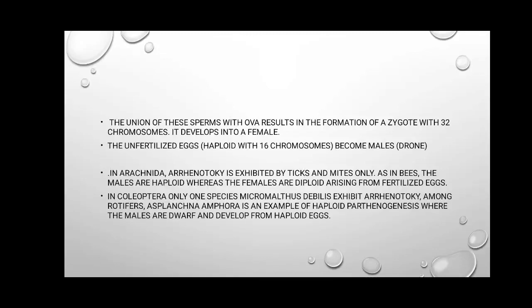Arrhenotoky also occurs in ticks and mites. Males are haploid and females are diploid. In Coleoptera, there is only one species, Micromalthus debilis, that reproduces via Arrhenotoky.